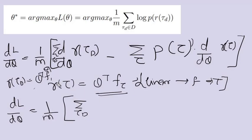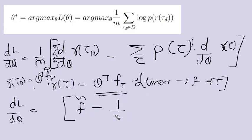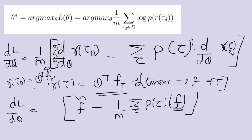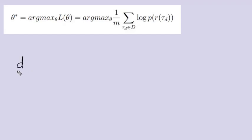Once we substitute that, we get 1 by m summation where the reward for trajectory demonstrations becomes theta transpose times f-bar — the average feature vector of the human expert trajectory data. And the second term becomes 1 by m summation over tau of p of tau times f, where f is the feature for that trajectory, since taking the derivative of theta transpose f with respect to theta gives just f.